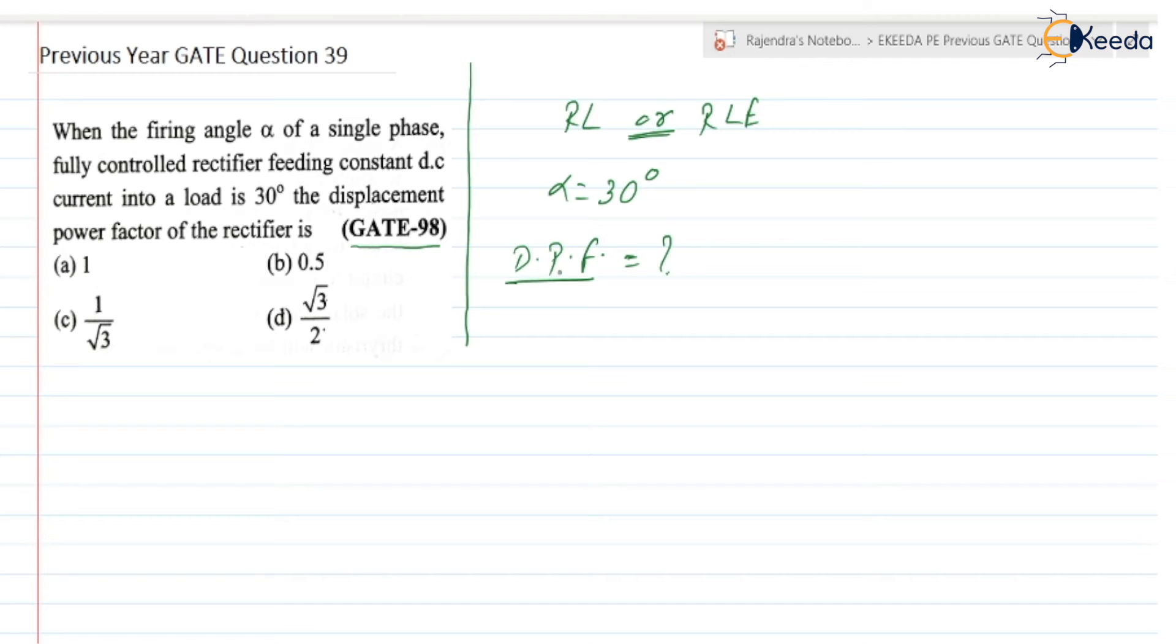It is the cosine of the angle between the supply voltage and the fundamental component of the load current. We have discussed that displacement power factor is nothing but cos alpha.